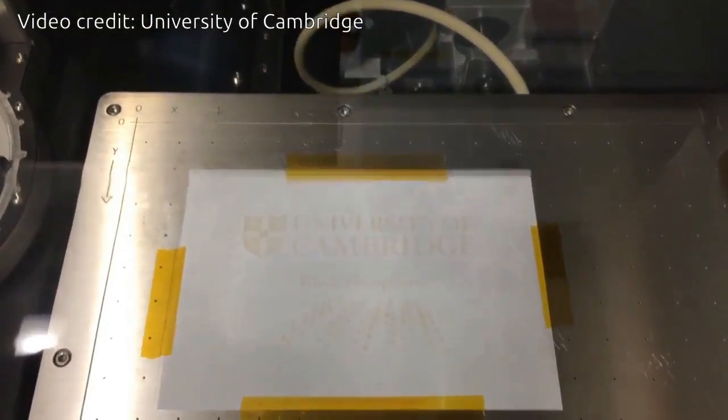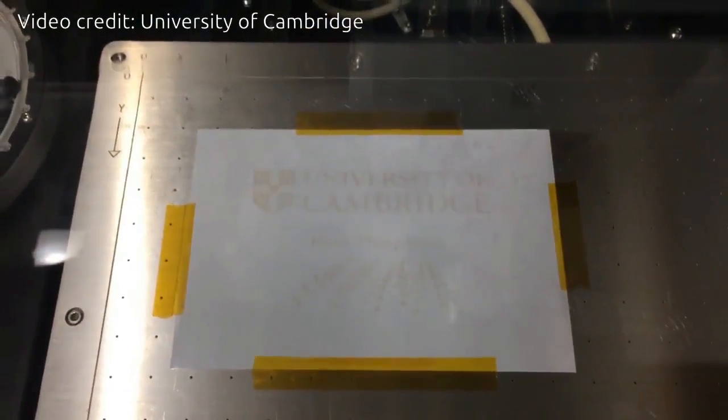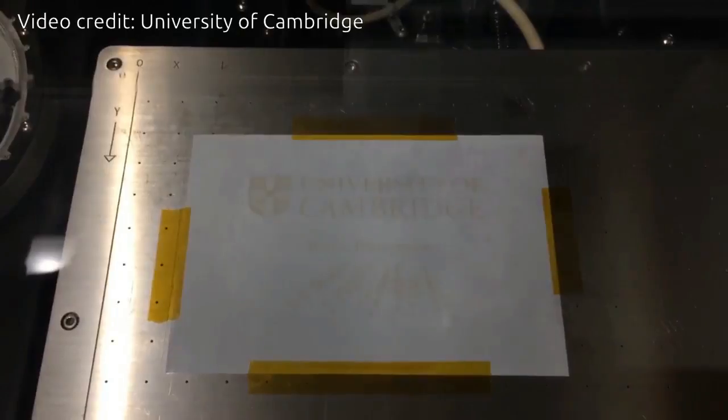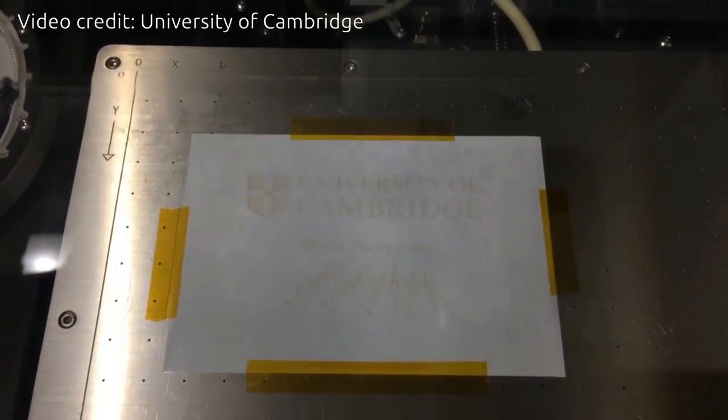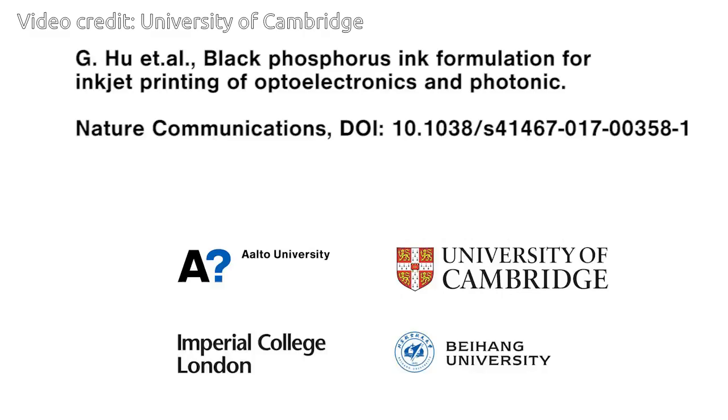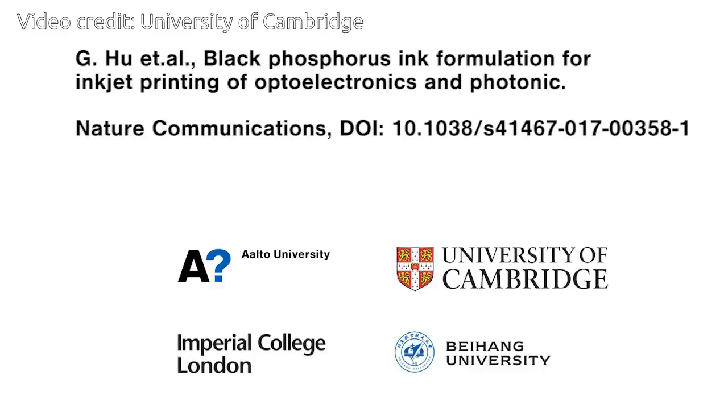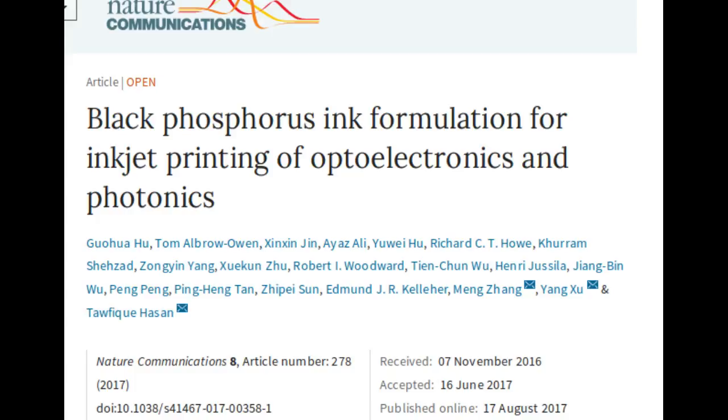Since the discovery of the Nobel Prize-winning material graphene, many new nanomaterials promise to deliver exciting new photonic and optoelectronic technologies. Black Phosphorus is a particularly interesting post-graphene nanomaterial for next-generation photonic and optoelectronic devices.